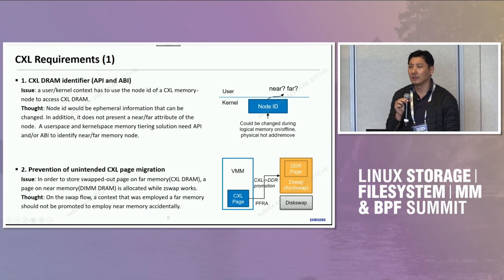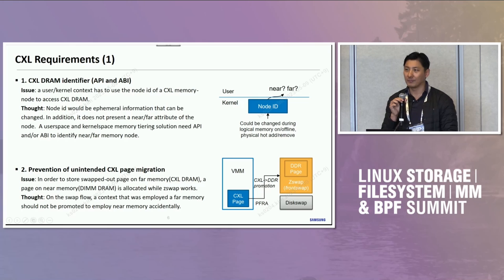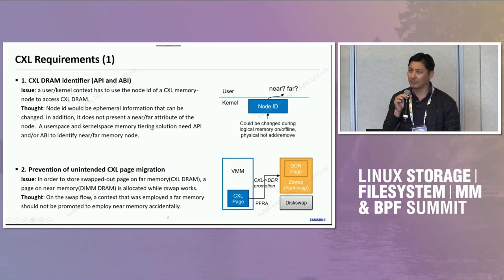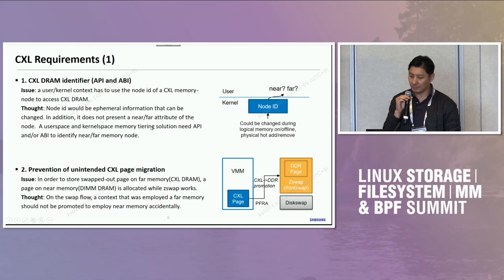Someone remote has a question or comment. I was trying to ask: the two bullet points we brought out — for the first one, there is libmemkind, which is already providing a user space API to help applications allocate based on criteria like memory attributes. The fact that a node ID can change across reboots or memory hot-plugs is already abstracted by libraries like libmemkind.